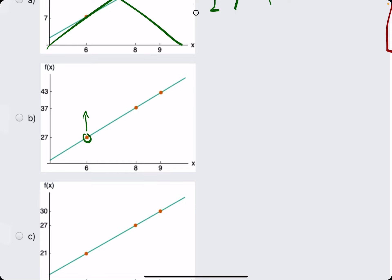So we move on to the second graph, checking the slope between these two points. The rise from 27 to 37 is 10. And the run from 6 to 8 is 2. 10 over 2 is equal to 5.